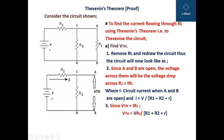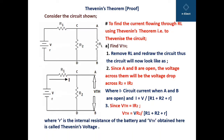This is the formula obtained for Thevenin's voltage for this diagram, where small r is the internal resistance of the battery. The VTH obtained here is called the Thevenin's voltage.